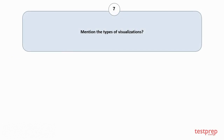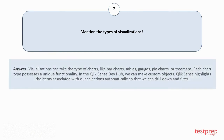Question number 7: Mention the types of visualizations. Visualizations can take the form of charts like bar charts, tables, gauges, pie charts, or tree maps. Each chart type possesses a unique functionality. In the Qlik Sense DevHub, we can make custom objects. Qlik Sense highlights the items associated with our selections automatically so that we can drill down and filter.